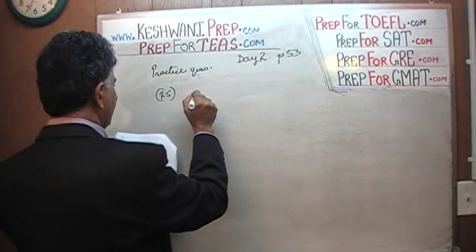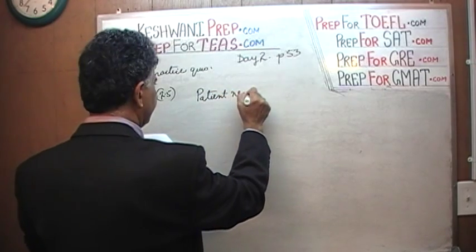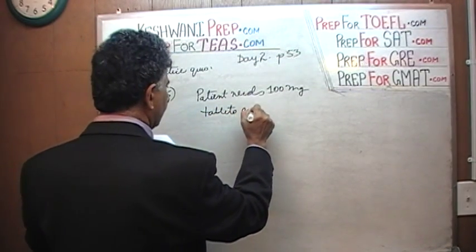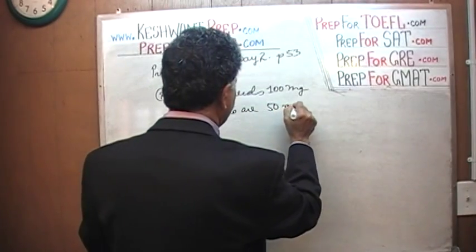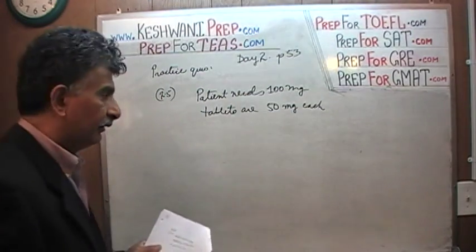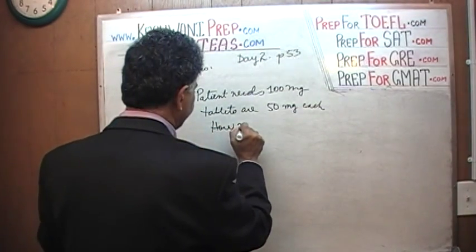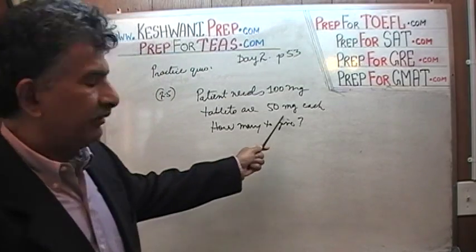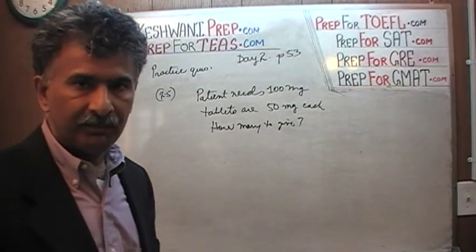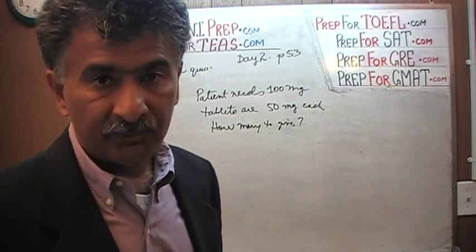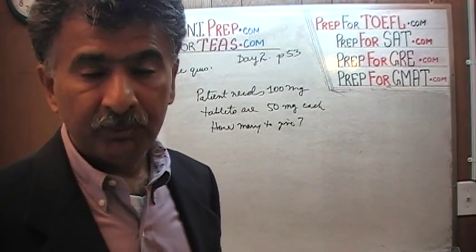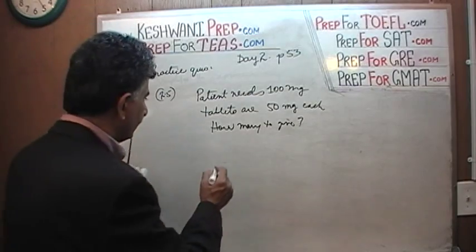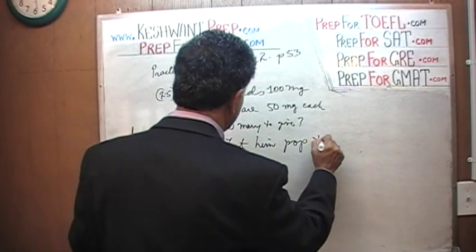Problem 2.5: we are told a patient needs 100mg. Tablets only come in 50mg each. The question is simply: how many to give? If the tablets are 50mg each, and he needs 100mg, then just give him two — that's all. The answer is 2 tablets.